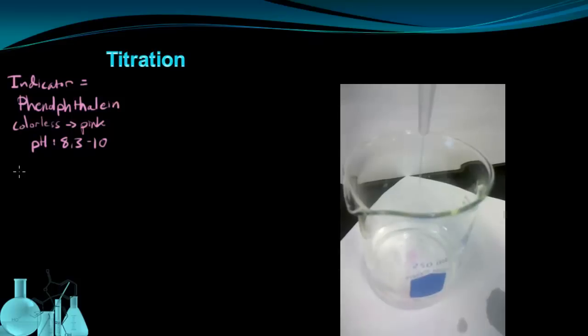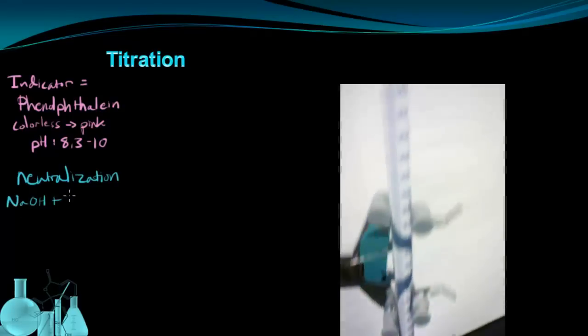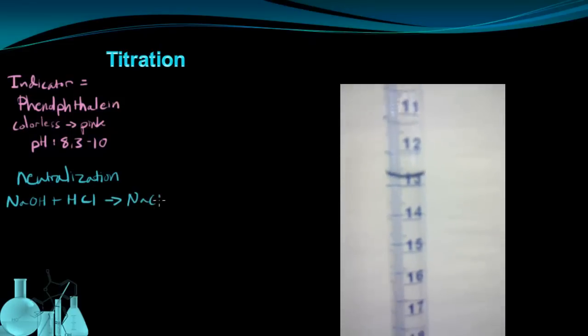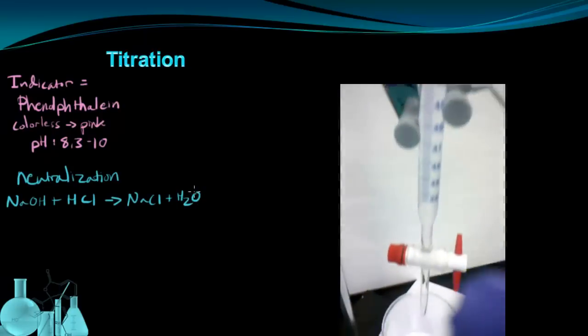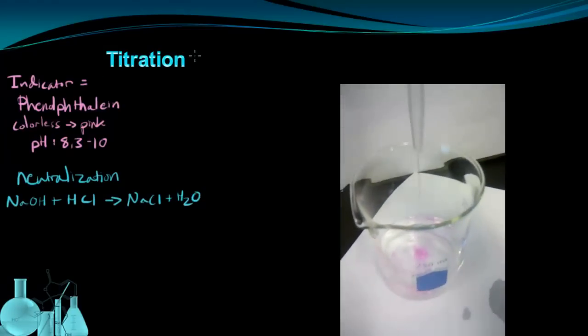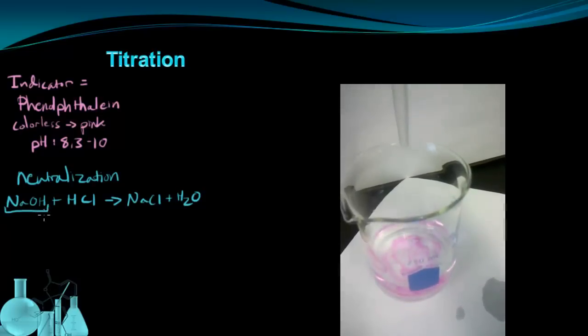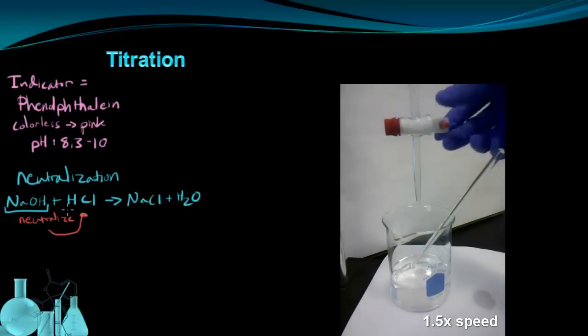So the basic idea behind a titration is the fact that we're doing a neutralization reaction. In this case, we have NaOH neutralizing hydrochloric acid. And according to the neutralization reaction, I should get NaCl and H2O. And the whole reason to do the titration is that I'm trying to find out how much NaOH I need to completely neutralize the volume of HCl that I started with.